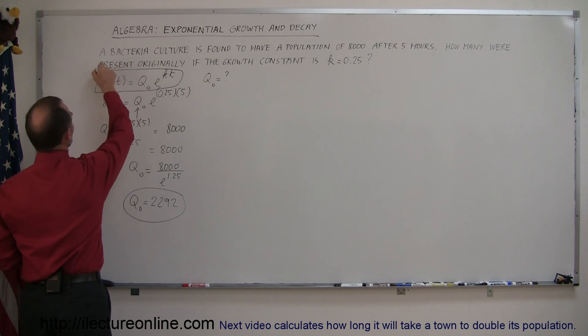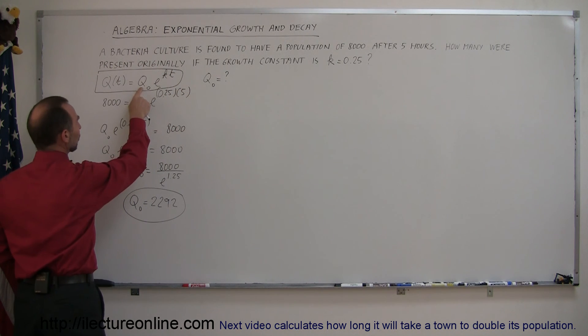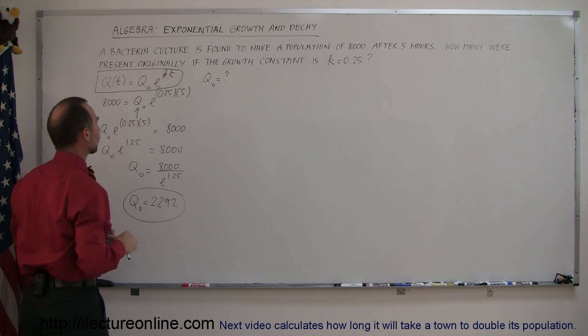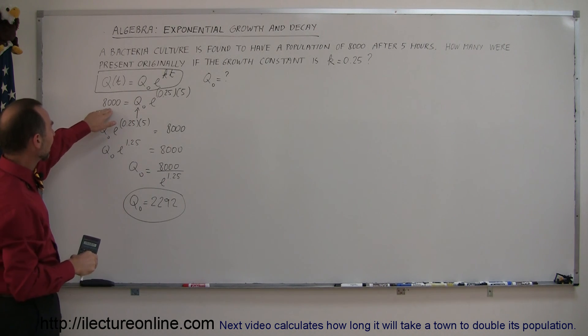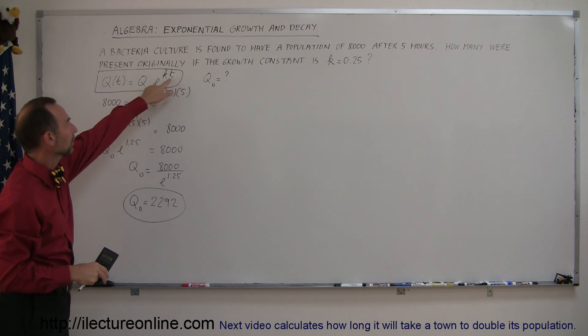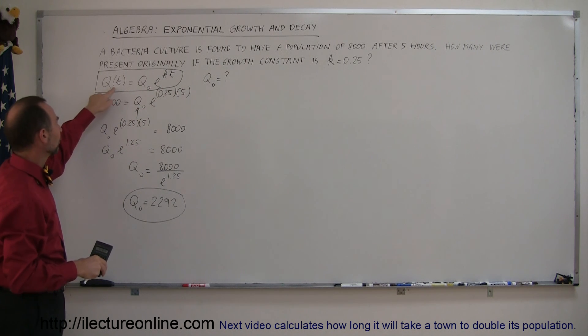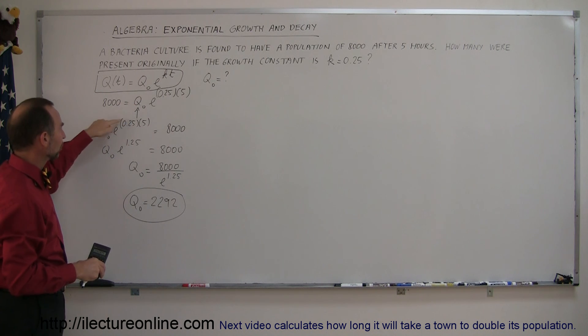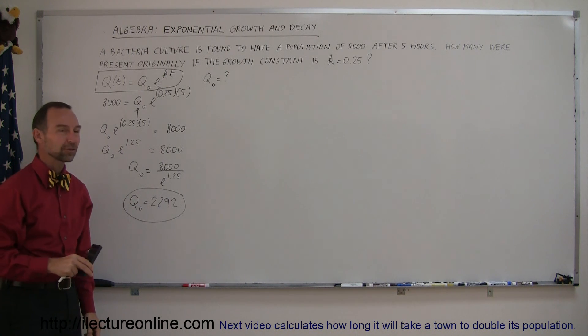So we're always going to use this equation right here, which is the exponential growth equation, where q sub nought is the initial amount that we have, q as a function of time is how much we have after a certain amount of time. We were given that we had 8,000 after five hours, we plug in 5 for t, 8,000 for the final amount, and the growth constant 0.25, and then we algebraically solve for q sub nought.